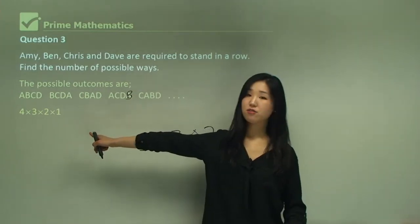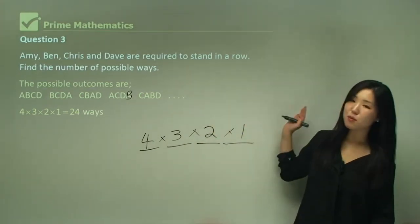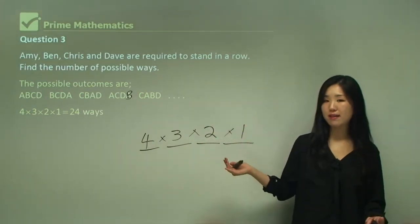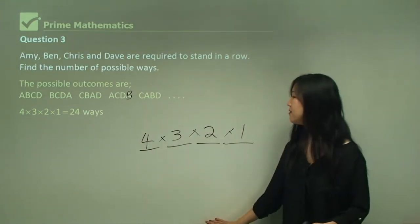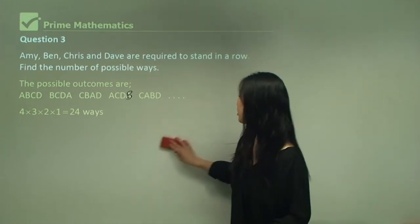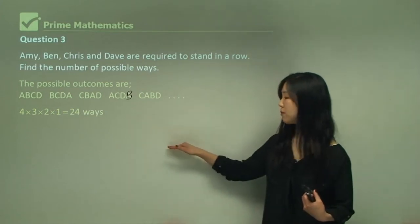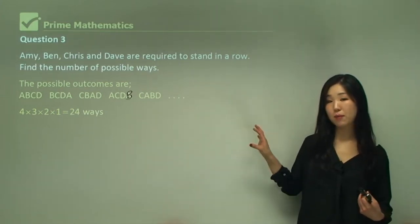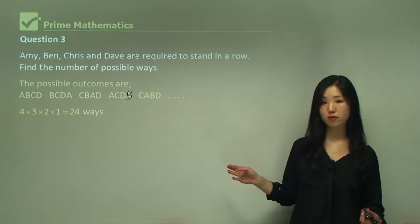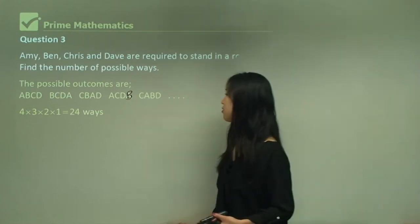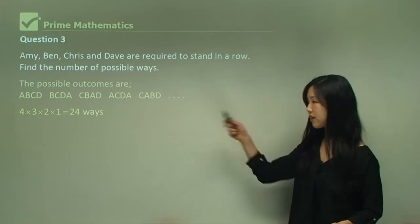Multiply it and you should get 24 ways. Instead of having to list them all out, just use the basic counting technique and multiply throughout. If you're not really sure how to approach a question, draw up little spots, think about each individual spot, and see how many possible choices you have to fill that spot. Sorry about the mistake earlier — it happens. Use the counting technique.